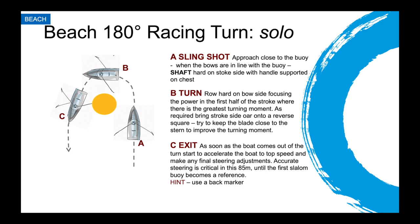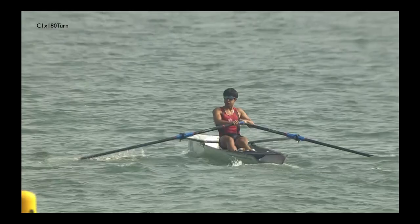That section between the big turning buoy and the first slalom marker is actually one of the most difficult sections to race, for both physical and technical reasons. Let's have a look at an example.